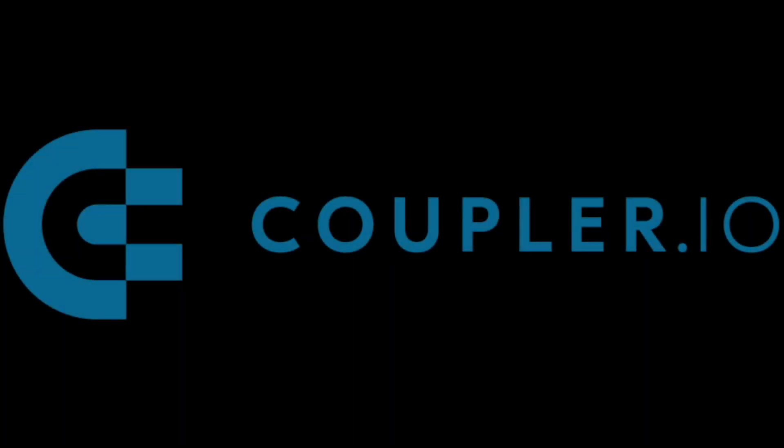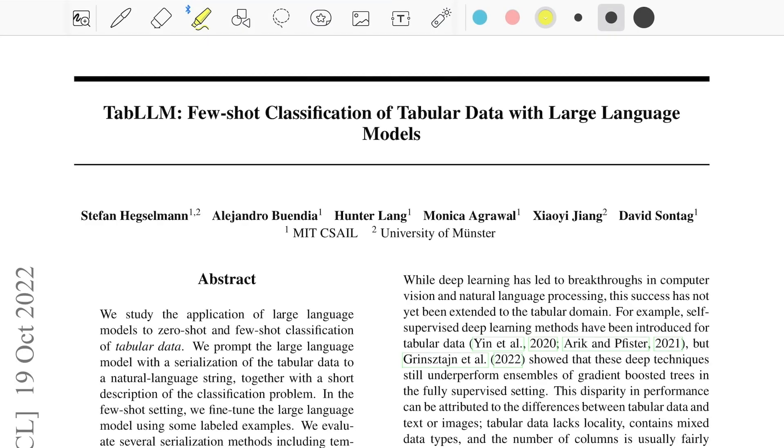This video is brought to you by coupler.io, more about this later. Hello there, welcome back to the new video. Today we'll be talking about this very interesting paper titled TabLLM: Few-shot Classification of Tabular Data with Large Language Models. This is from researchers from MIT CSAIL and University of Munster and came out in October 2022.